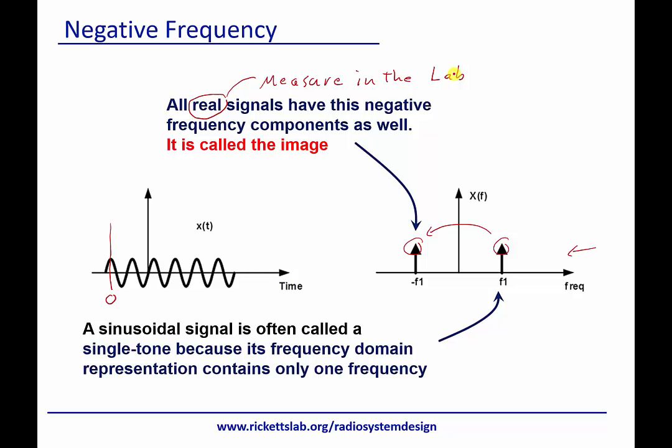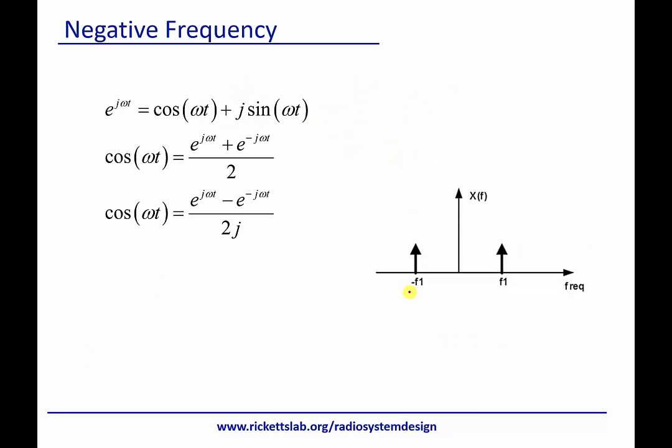By real here we mean we can measure it in the lab. I specify that because we're going to be talking a little bit later about real and imaginary components in terms of in phase and quadrature. That just has to do with the fact that we're using imaginary to represent a 90 degree phase shift. But those are both signals we can measure in the lab. So real here is more of just realistic or stuff we can measure in the lab as opposed to real and imaginary.